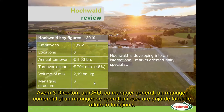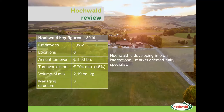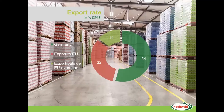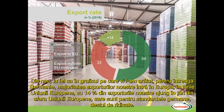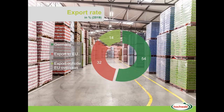Our managing directors are three: a CEO — the general manager — a commercial manager, and an operations manager who takes care of the factories. Like the chart I've shown you for all of Germany, the majority of our exports goes into EU countries, but 14% of our export goes into countries outside of the European Union, which is quite high by German standards.